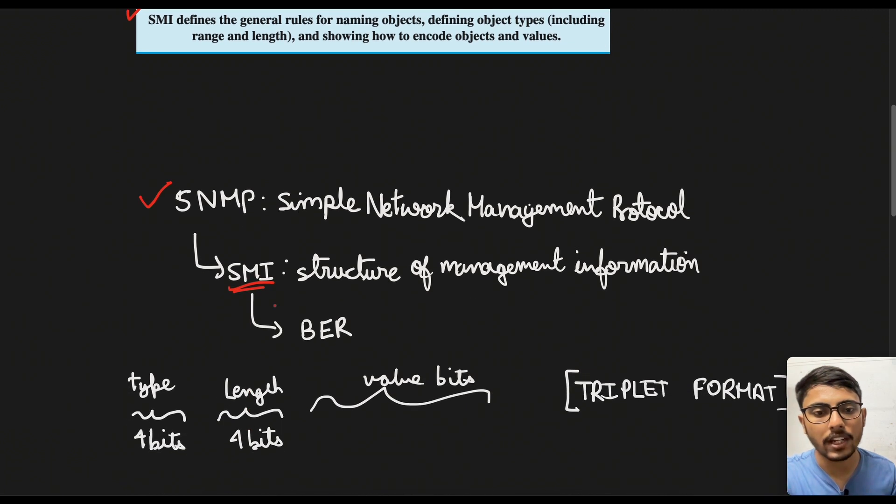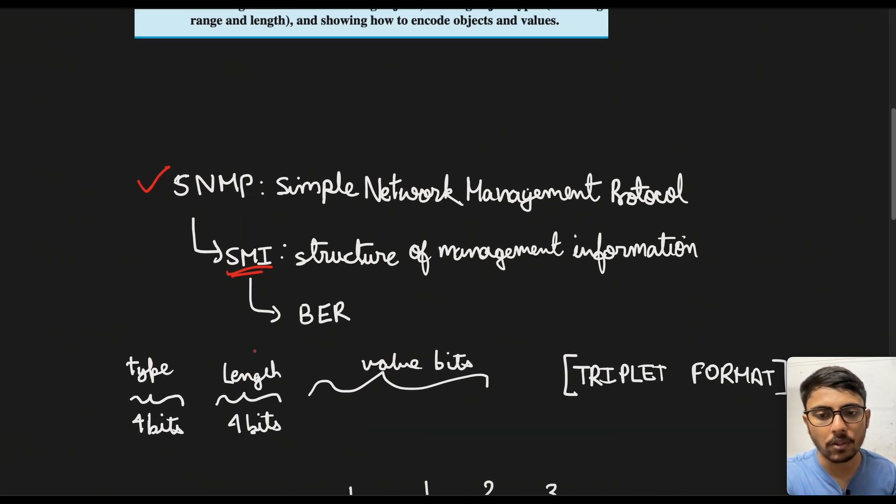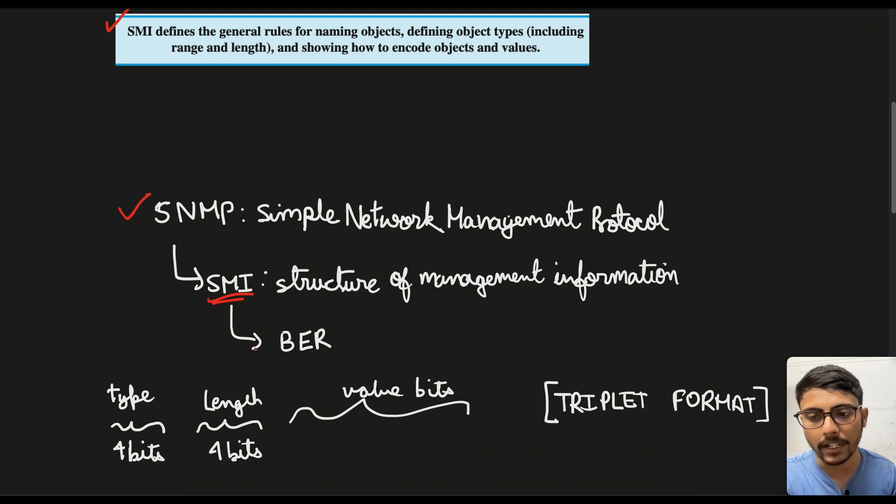Now since we are talking about the structures, consequently the structure will also have some basic encoding schemes. So in that case the basic format that we are going to have is basically a triplet format. So in that triplet format, the first four bits is basically the type of data we are going to transmit, the next four bits will be the length, and finally the value bits. So this three tier architecture is the basic encoding rules. BER stands for basic encoding rules.